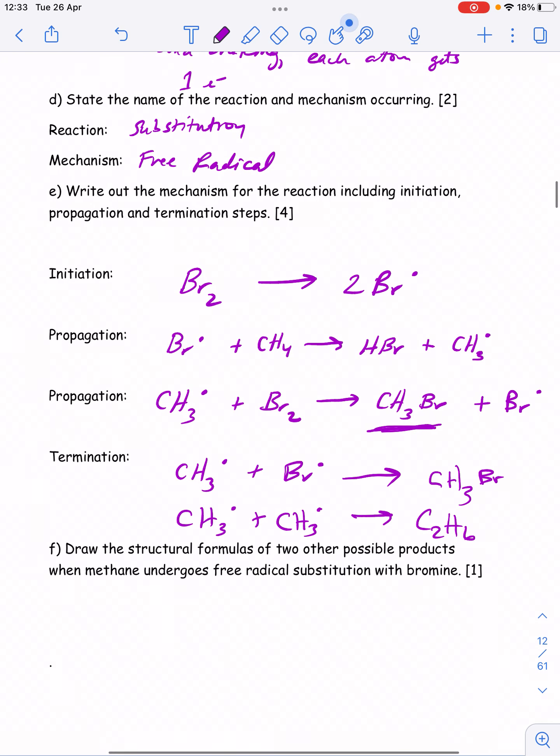In general, the initiation, propagation, propagation, termination—it's pizza party time. You form two radicals, you use one of those and create another. You use that radical to create another and you're right back where you started. Then termination is two radicals becoming no radical.